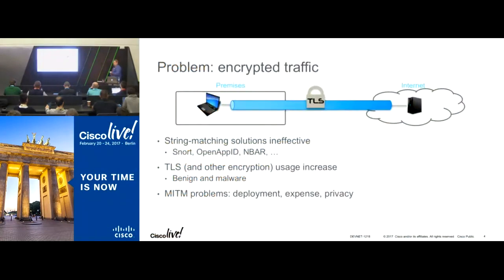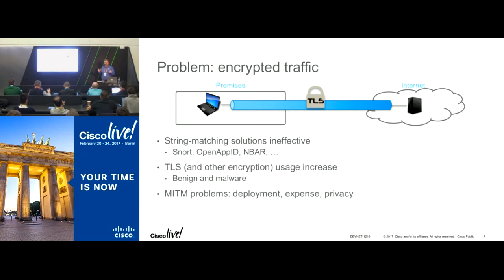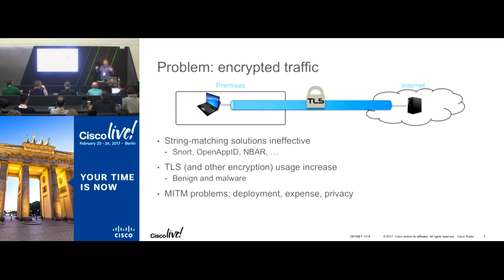So what's the problem with encrypted traffic? The problem is it's encrypted. We can't see what's in the payloads, and that's by design. A lot of the utilities we use today are string matching — trying to look at different patterns and strings — and when you encrypt everything, that becomes very difficult; it defeats those tools. TLS usage is increasing everywhere, including malware. Malware is now using TLS streams and encrypted traffic to do what it wants to do as well. So that's a big problem.